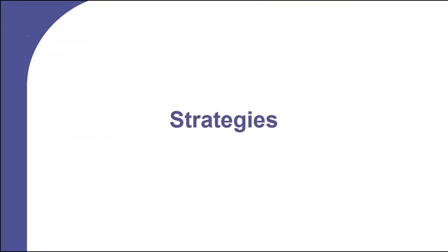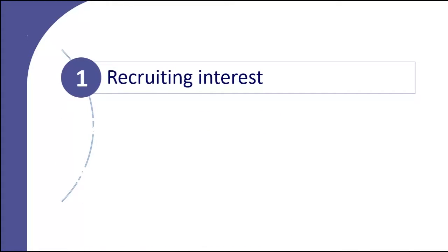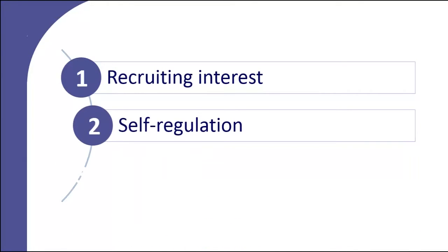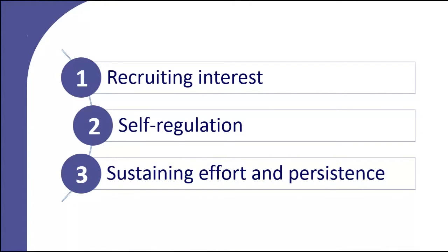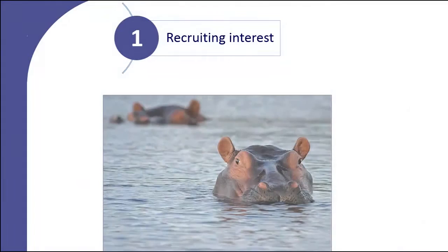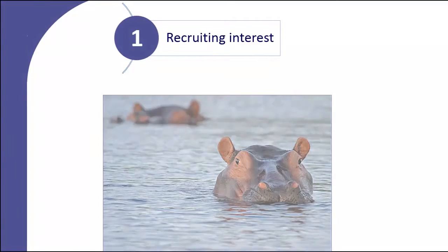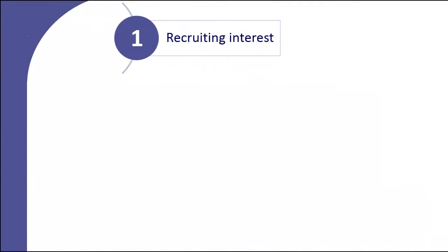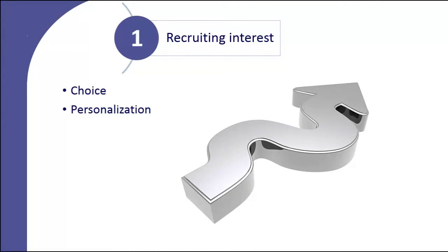So let's discuss some ways we can achieve that. The strategies are grouped into three categories. We as instructors should provide options for recruiting interest, self-regulation, and sustaining effort and persistence. Information that does not draw a learner's attention is in fact inaccessible because it goes unnoticed. One way of encouraging students' interest in the topic might be by allowing choice and personalization into learning materials and assessments. The choice of topic or even the whole assignment creates an opportunity for the learner to introduce more relevance to their learning, make it their own, and stay motivated for more.